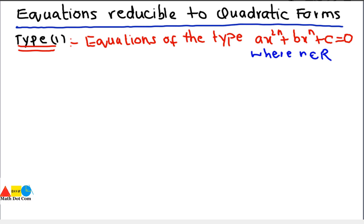We will discuss equations of the type ax raised to power 2n plus bx raised to power n plus c equals to 0. If you come across equations where the power of x is greater than 2 and is even, n belongs to real numbers. When we put n equals to 1, it becomes ax squared plus bx plus c, which is the standard quadratic equation.